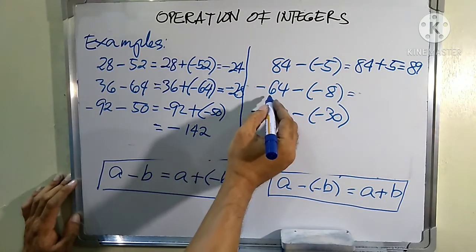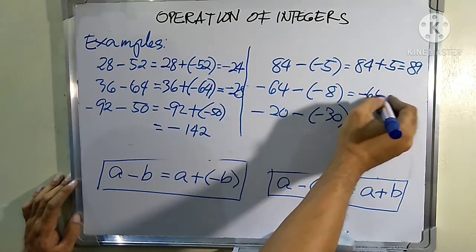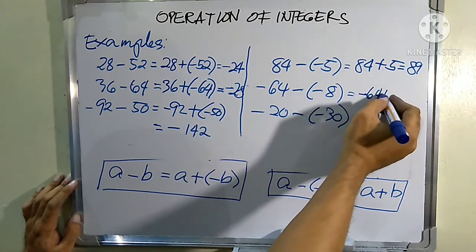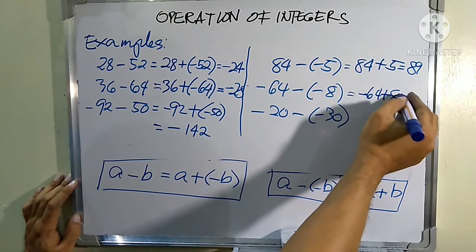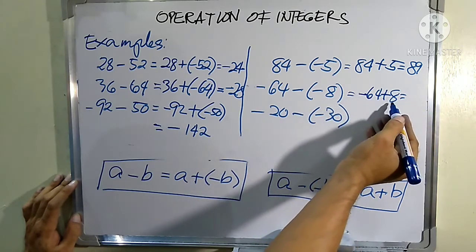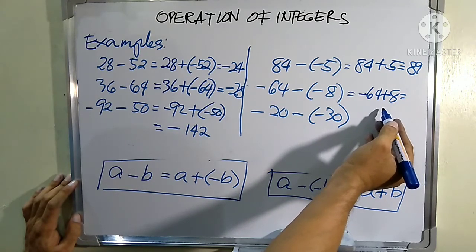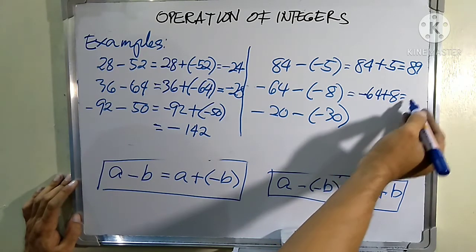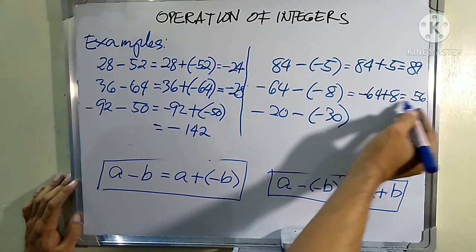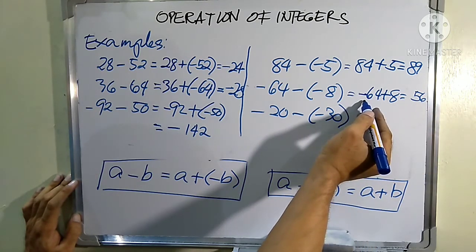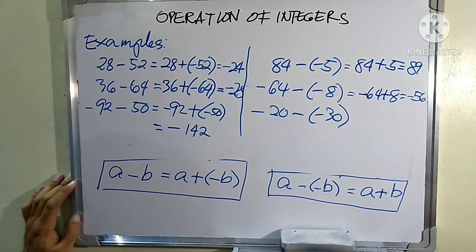Next number: negative 64 minus negative 8. We rewrite this as negative 64 plus the opposite of negative 8, which is positive 8. These two numbers now have different signs, so we subtract: 64 minus 8 is 56. Since 64 is farther from zero, the answer is negative 56.